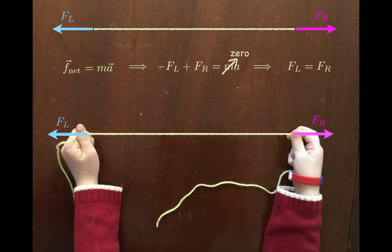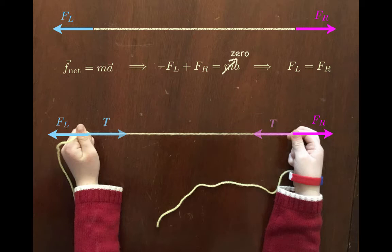Now Newton's third law states that for every action there's an equal and opposite reaction. So each of the hands is pulling on the string and according to Newton's third law the string has to be pulling back on each of the hands. I'll label that force that the string exerts back on the hands as T, and because we found that FL is equal to FR these tension forces have to be equal to each other.